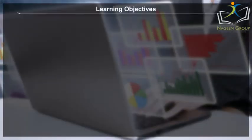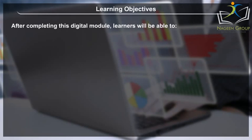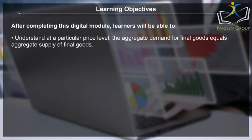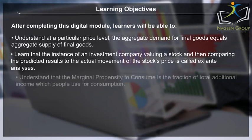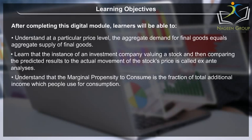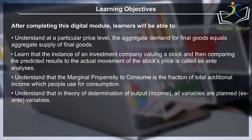Learning Objectives: After completing this digital module, learners will be able to understand that at a particular price level, the aggregate demand for final goods equals aggregate supply of the final goods. Learn that the instance of an investment company valuing a stock and then comparing the predicted results to the actual movement of the stock's price is called ex-ante analysis. Understand that the marginal propensity to consume is the fraction of total additional income which people use for consumption. Understand that in theory of determination of output or income, all variables are planned ex-ante variables.